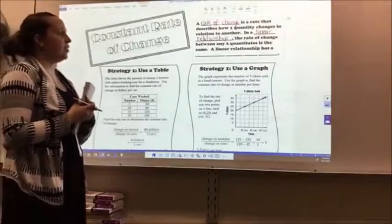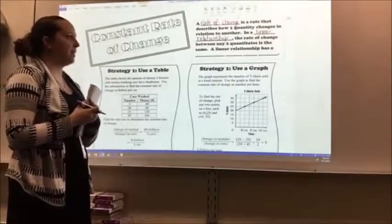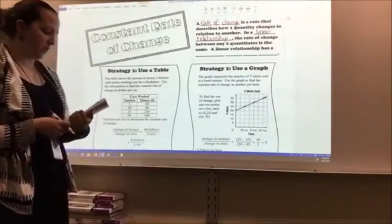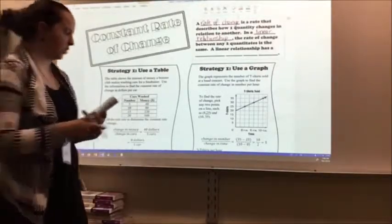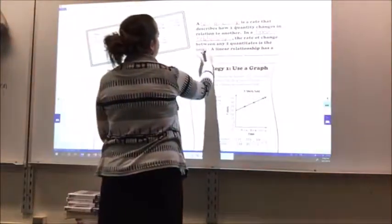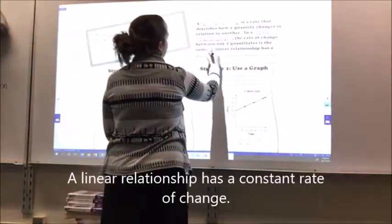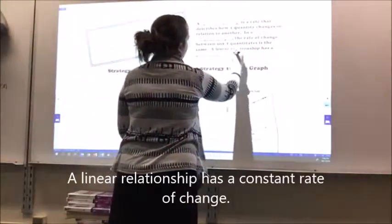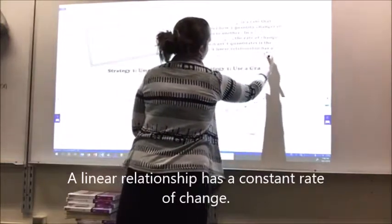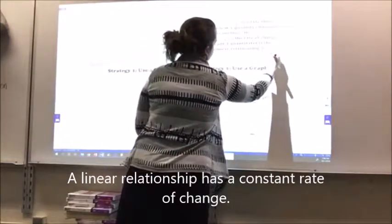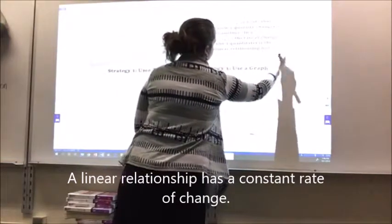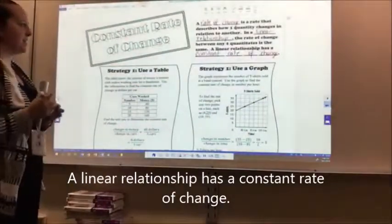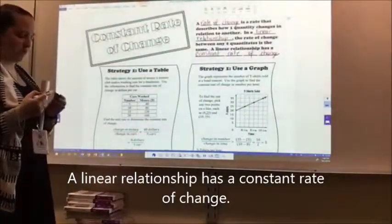A linear relationship has a blank, blank, blank, blank. In those blanks, you're going to write 'constant rate of change.' So, a linear relationship has a constant rate of change.